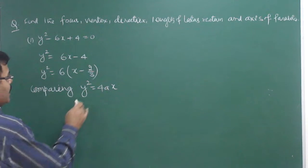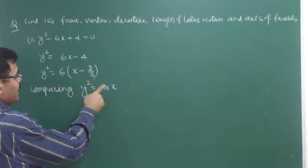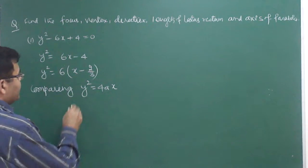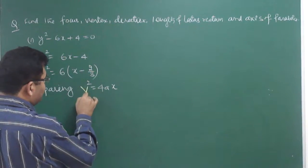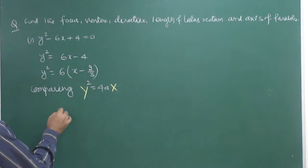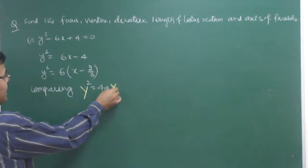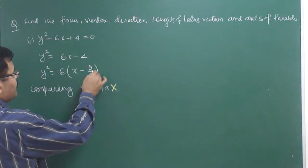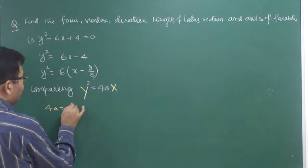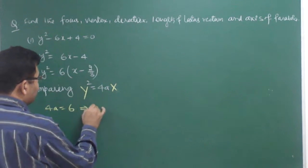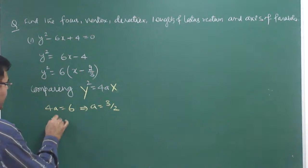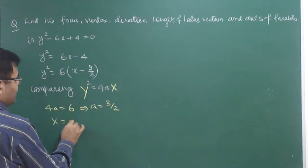We can write y² = 6x - 4, or y² = 6(x - 4/6). Now, 4/6 is nothing else but 2/3. So y² = 6(x - 2/3). Comparing this with y² = 4ax — x is also present on both sides — so we use capital Y and capital X. This is a parabola of the form Y² = 4aX. Capital X is in place of (x - 2/3) and 4a = 6, so a = 3/2.